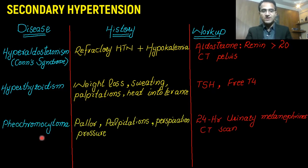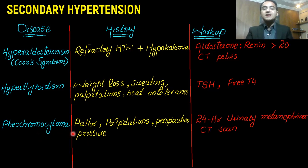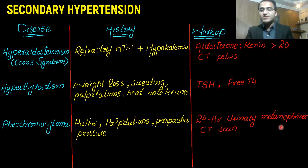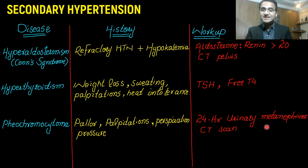The third cause is pheochromocytoma, a tumor that releases epinephrine and norepinephrine into the blood. That release results in palpitations, perspiration, and increased sympathetic activity leading to increased blood pressure. The four Ps are: pallor, palpitation, perspiration, and blood pressure. For workup, get a 24-hour urinary metanephrine level. Urinary metanephrines are a degradation product of norepinephrine and epinephrine — if elevated, that indicates pheochromocytoma. A CT scan may also be needed to look for a tumor in the adrenal glands.